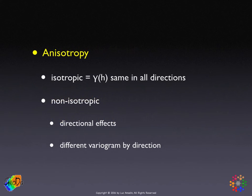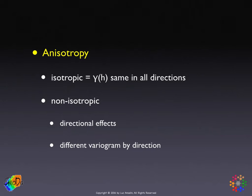A final aspect is whether or not the process is isotropic. When computing an empirical variogram, one consideration is whether the same variogram holds in all directions. When this holds, the process is called isotropic — the only variable that matters is the distance of separation, and the process is the same in all directions. When there are directional effects, the process is called non-isotropic or anisotropic, meaning we need different variograms for each direction, as seen in our application of empirical variograms.